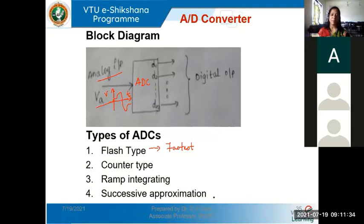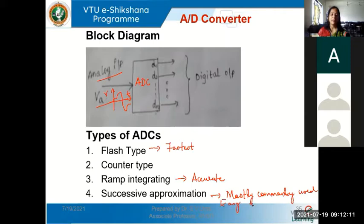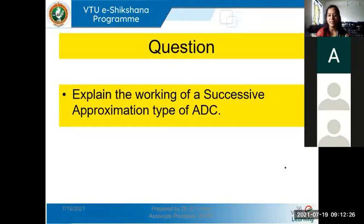Finally comes the successive approximation ADC, which is one of the most commonly used ADCs. The ramp or integrating type will give you very high accuracy, while the successive approximation type is the most commonly used because it is easy to implement and analyze. That's why successive approximation ADCs are used more commonly in various applications.